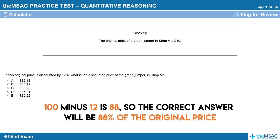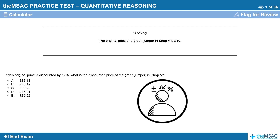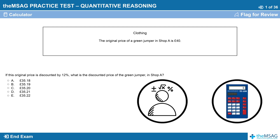100 minus 12 is 88, so the correct answer will be 88% of the original price. You should be able to do this subtraction in your head, which will save time if you choose not to use the calculator. For the next step, you likely will need to use the calculator, but here's how you can still save valuable seconds.